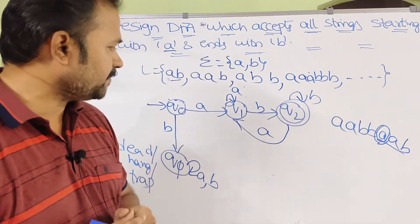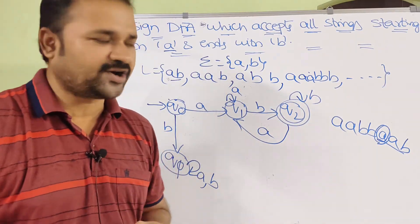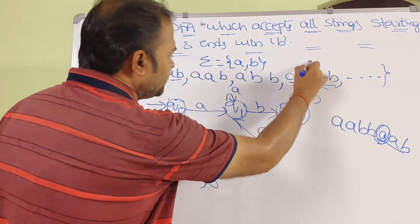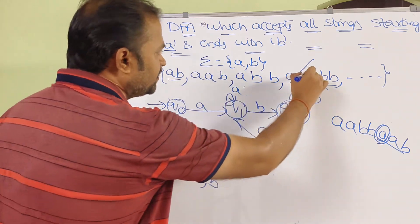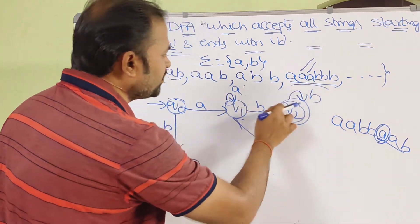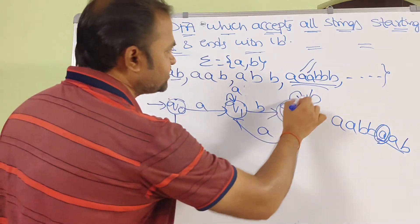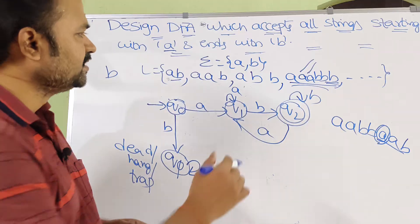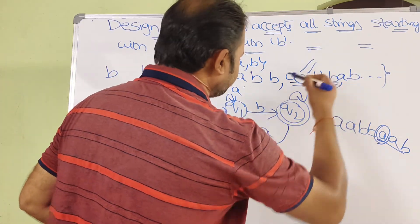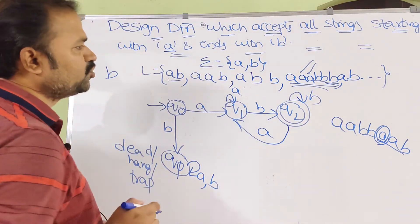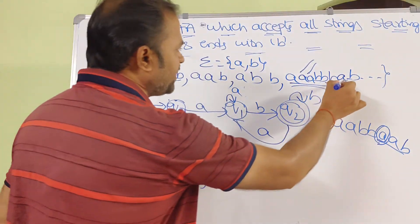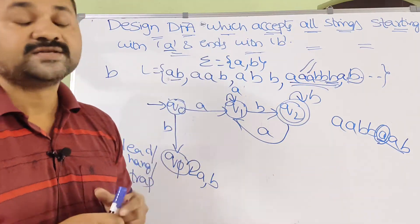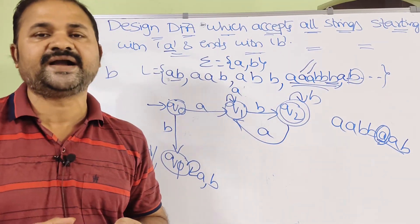This is the complete DFA. Let's verify: take a string A A A B B A B. Q0 on A → Q1, Q1 on A → Q1, Q1 on A → Q1, Q1 on B → Q2, Q2 on B → Q2, Q2 on A → Q1, Q1 on B → Q2, which is the final state. This DFA correctly accepts all strings starting with A and ending with B.